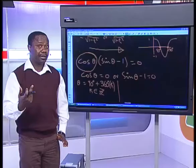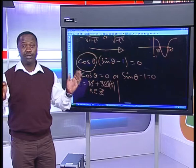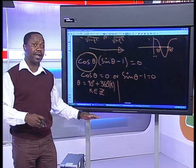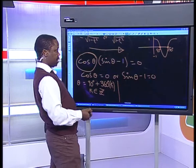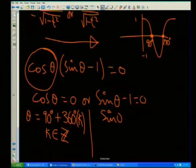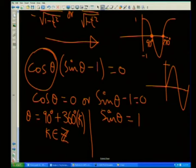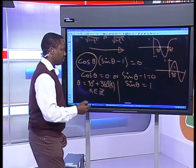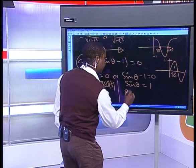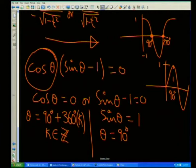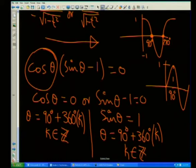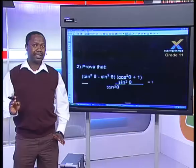That is the general solution for the first factor. For the second stream: sine of theta equals 1. Looking at the sine graph, it reaches 1 at 90 degrees. So the general solution is also theta equals 90 degrees plus 360k, where k is an element of integers. If they wanted a specific solution, they would tell you the domain — for example, theta between minus 360 and 360 — and then you'd find all angles in that interval.